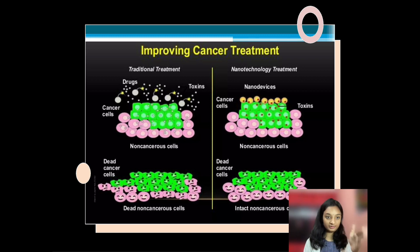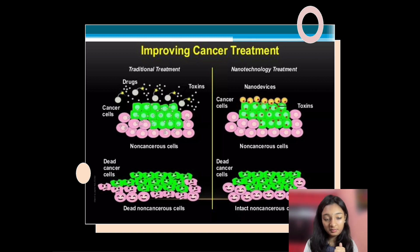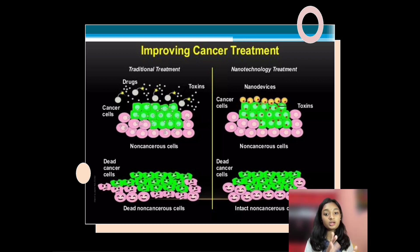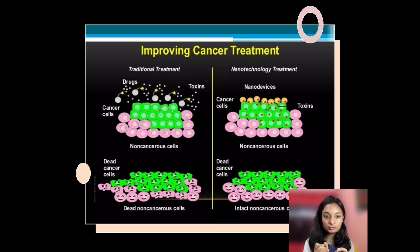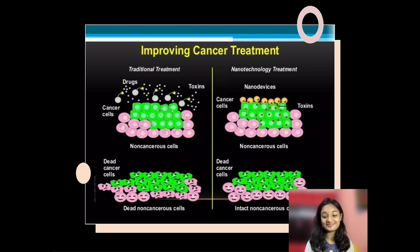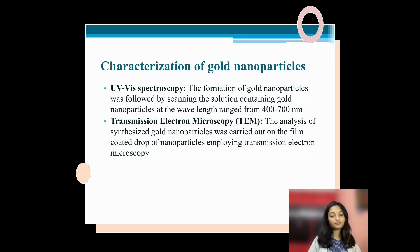Comparing traditional treatment and nanotechnology treatment: on the left side, the traditional treatment — the green cells represent cancer cells and the pink ones are non-cancerous cells. Drugs are injected, and the cancer cells are killed, but non-cancerous cells are also affected due to the drugs and their side effects. On the right side, the nanotechnology treatment — nano devices are used, cancer cells are killed, but the intact non-cancerous cells are not affected because there are no side effects and no toxins.